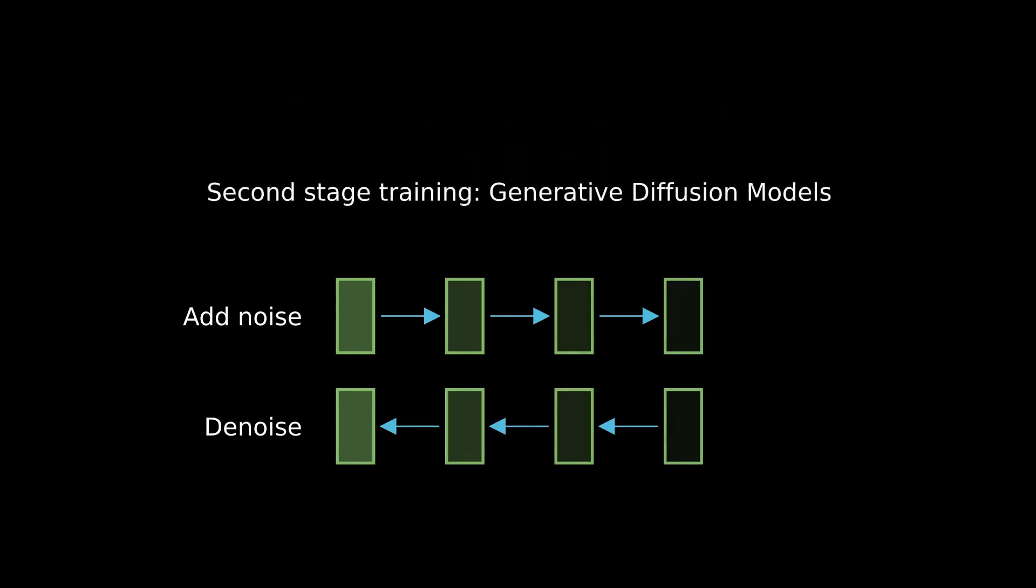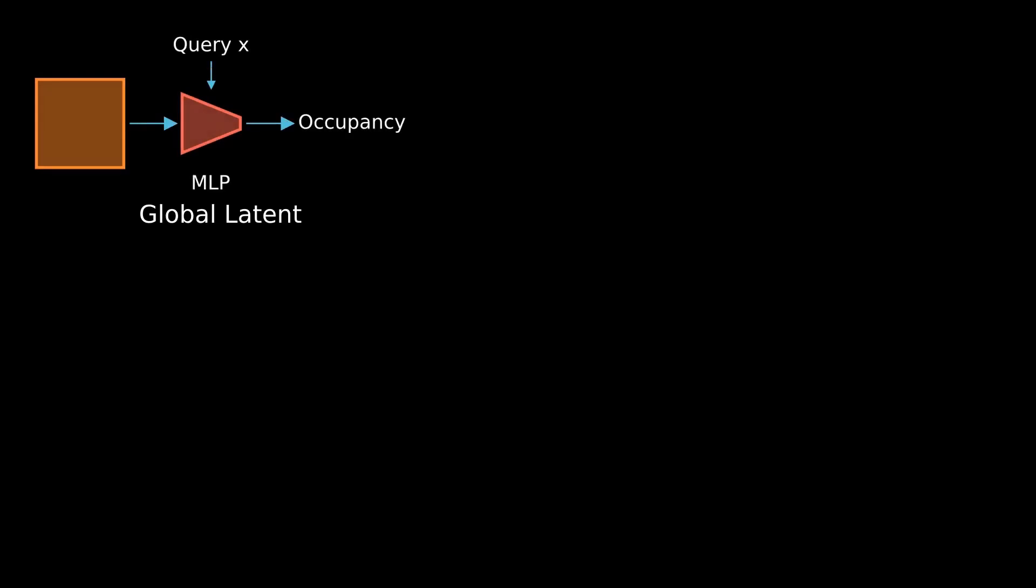How we represent 3D shapes is a key design choice for neural fields. The simplest method is using a global latent to describe a shape. This kind of method often leads to low-quality shape reconstruction.